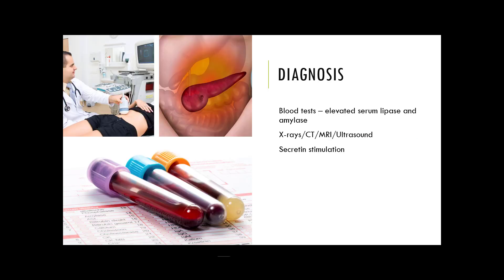Chronic pancreatitis is easily misdiagnosed as acute because the symptoms are similar. However, there are a number of tests that help diagnose chronic pancreatitis, including blood tests to look for abnormal levels of pancreatic enzymes and blood sugar response. Imaging tests such as x-rays, CT scans, MRI, and ultrasounds can also be used to help diagnose pancreatitis. A secretin stimulation test, which measures how the pancreas functions during digestion, may also be used.